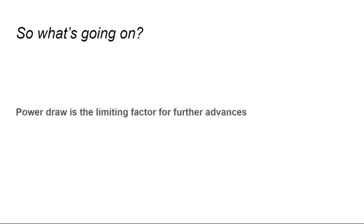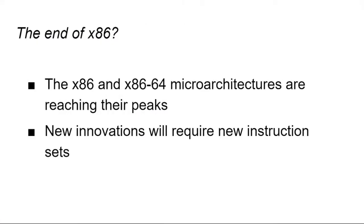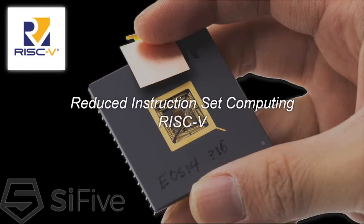So, what's going on? Power draw is becoming the limiting factor in how fast a CPU can operate, processors are reaching theoretical maximums, and more broadly, Moore's Law is coming to an end. The x86 platform is constrained by heat and power needs, and the next big innovations in computing will have to come from different types of CPU instruction sets. This is where RISC-V comes into play.